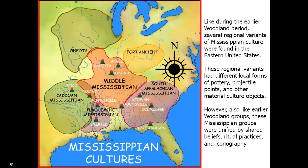Like during the earlier woodland period, there were several regional variants of Mississippian culture across the eastern United States. These regional variants differed in local forms of pottery, how they made projectile points, other material culture objects like houses, and some variation in treatment of the dead. However, these Mississippian groups were unified by certain shared beliefs and ritual practices, particularly a type of ritual iconography called the Southeastern Ceremonial Complex.